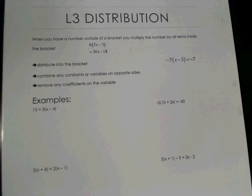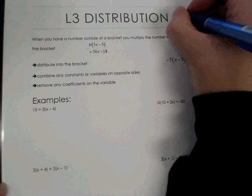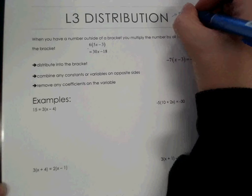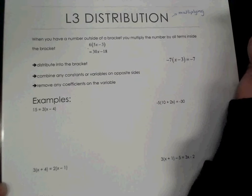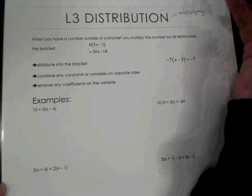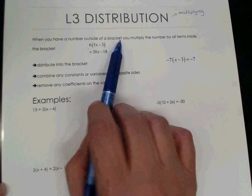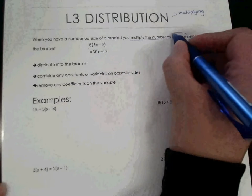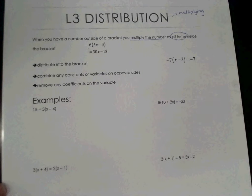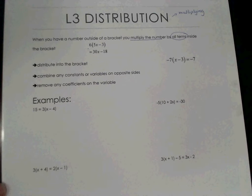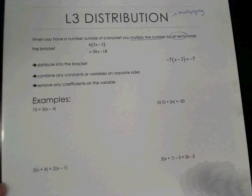Hi folks, this is our third lesson and this is distribution — really it's more multiplying. You've seen this before when we did the polynomial unit. When you have a number outside the bracket, you multiply the number by all the terms inside. That's the most important thing — multiplying by all the terms inside. We call it leapfrog, and we did this in the polynomial unit with monomials.